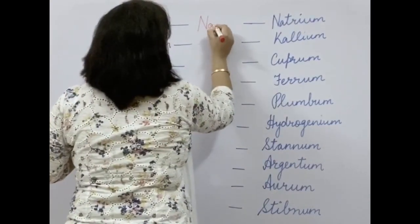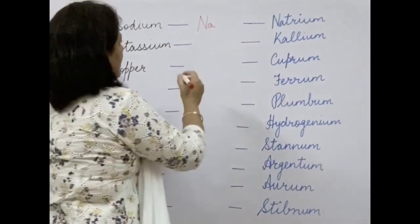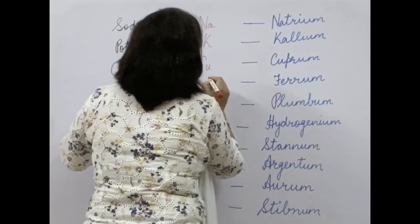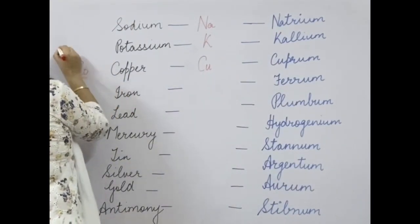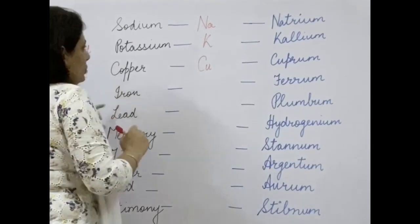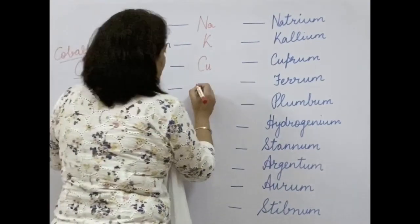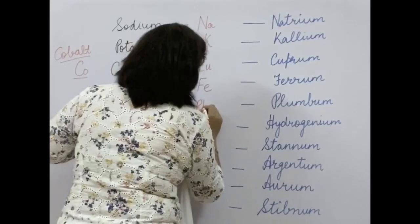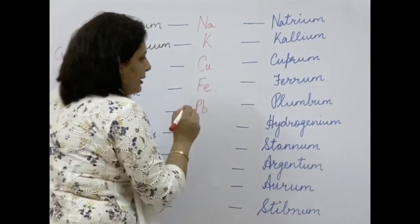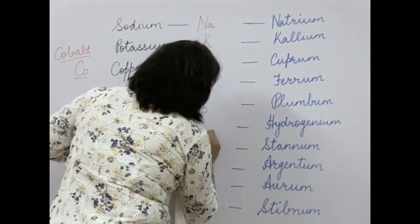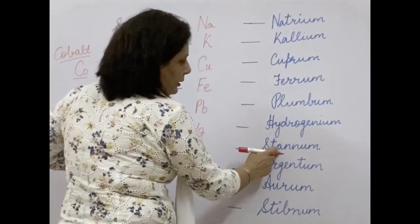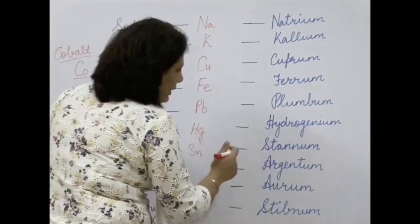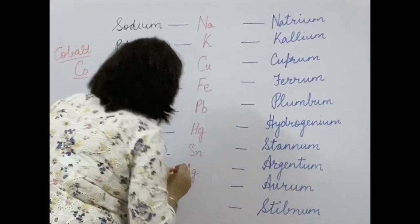Sodium: derived from Latin word natrium, symbol Na. Potassium: Latin word kalium, symbol K. Copper: Latin word cuprum, symbol Cu — we don't write Co because that would be cobalt, a totally different element. Iron: derived from ferrum, symbol Fe. Lead: derived from plumbum, symbol Pb. Mercury: its Latin name is hydrargyrum, so we write its symbol as Hg. Tin: Latin term is stannum, symbol Sn.